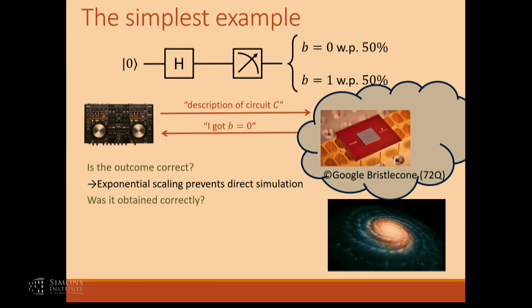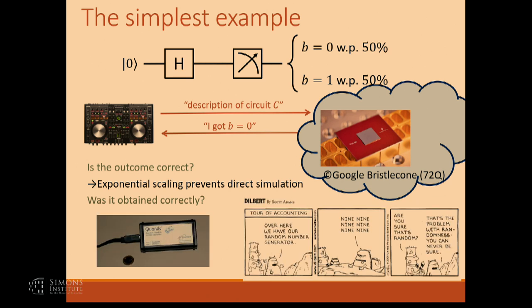Another, slightly more subtle question is: maybe I'm interested not only in whether the outcome is correct or not, but was it obtained correctly? That's a question relevant for randomness. 50-50 is correct, but in order to certify that the outcome I get is random, that's not a property of the outcome itself — it's a property of the process that generated it. If you're supposed to be generating random numbers and IBM reports that they got 999999, on what basis are you going to complain about that number? It is a legal outcome. That's the verification question.